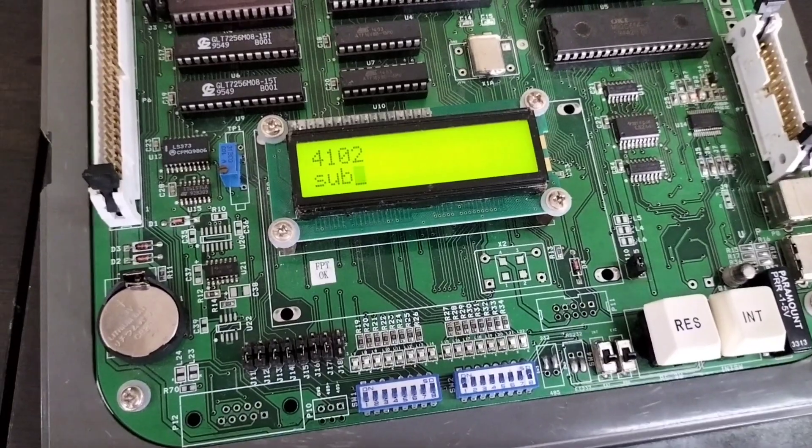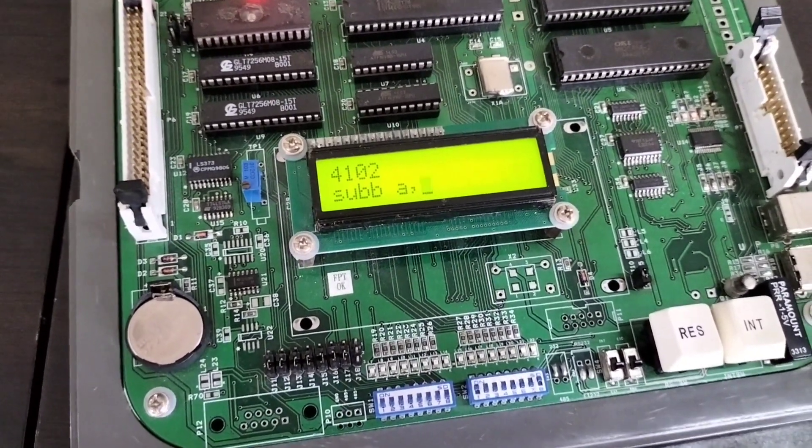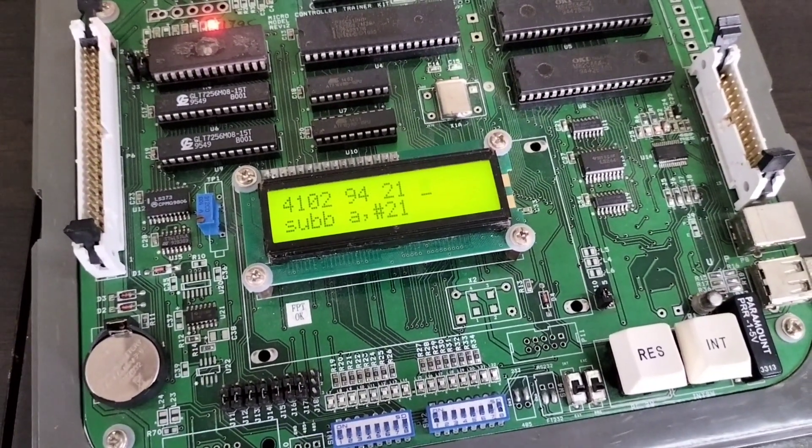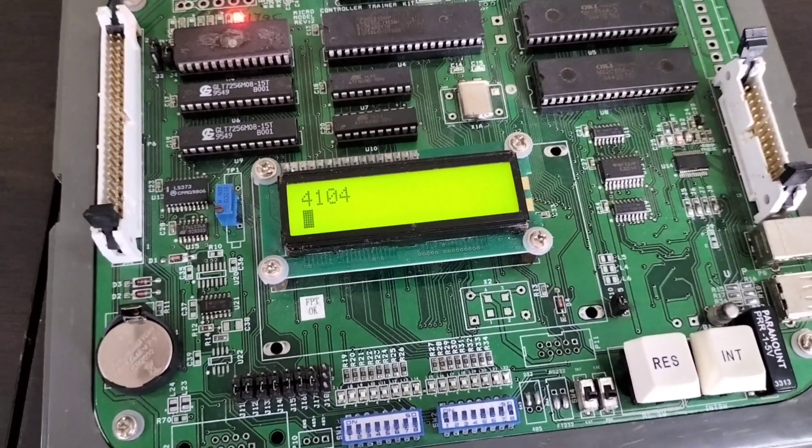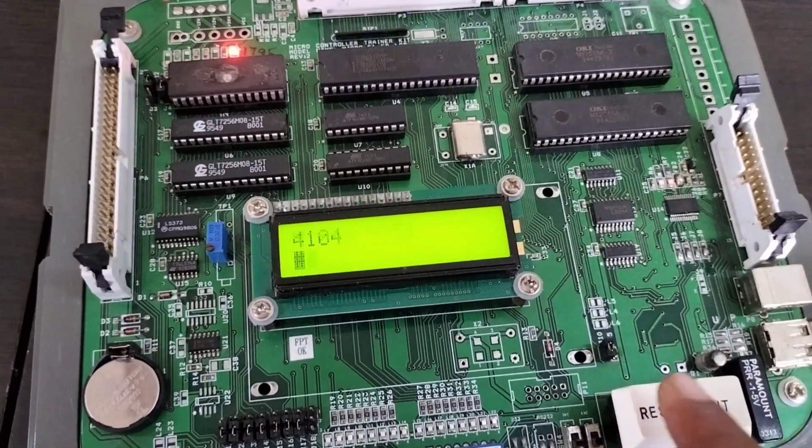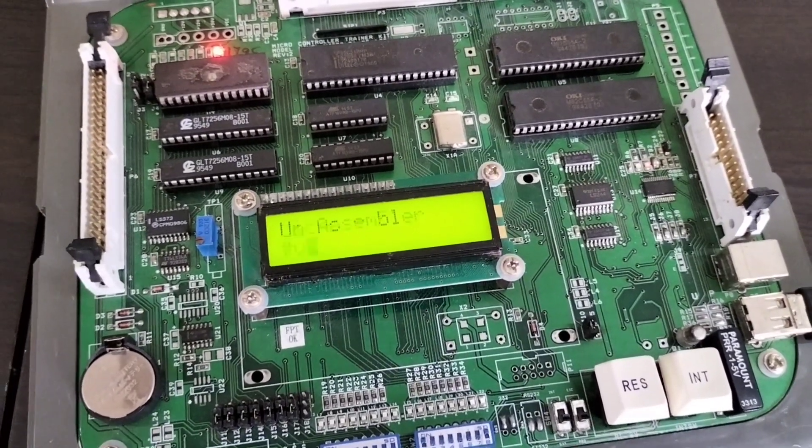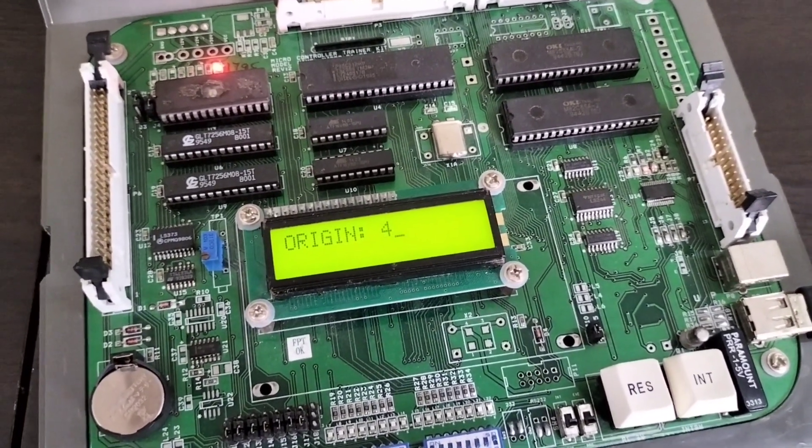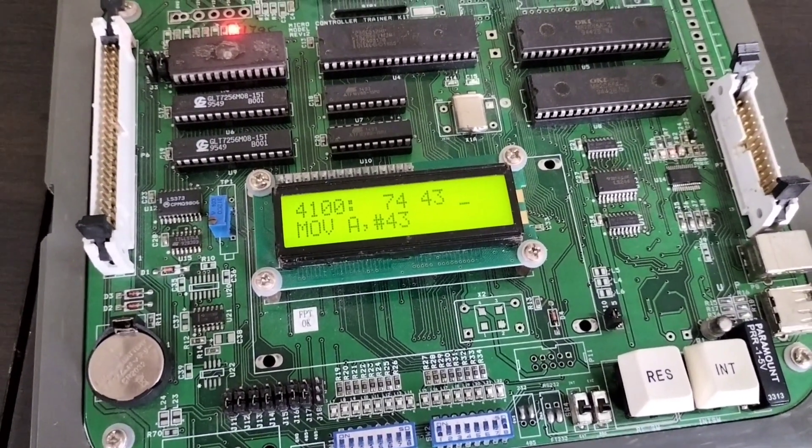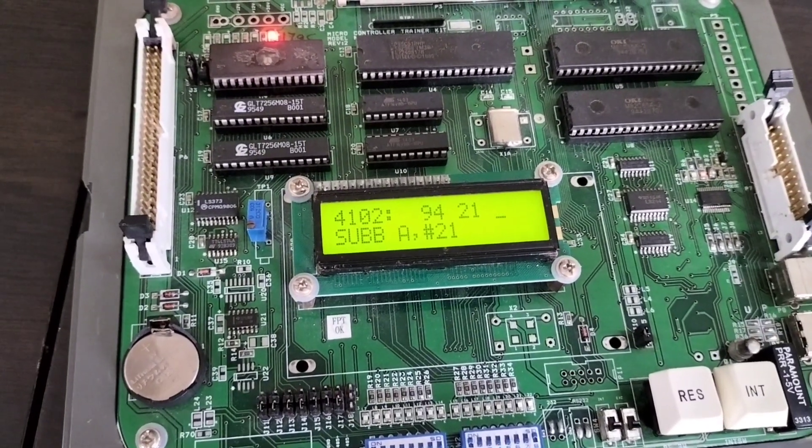Give 4102. There we are going to give the new instruction: SUBB A, #21. Now it is going to the next address location 4104. Press reset. Now see whether all the program is properly given. Give the starting location. MOV A, 43; SUBB A, 21. Yes, the new instruction has been loaded properly.